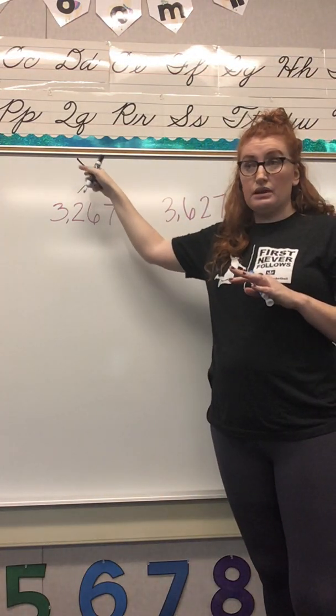Some of you might be able to look at these two and already know the answer and write the symbol and move on. Some of you might be like me as a kid and struggle a little bit. So my teacher sat me down and said here's something that I think might work for you. I have my first number here and my second number here. She said take that second number and line it up right underneath the other number.